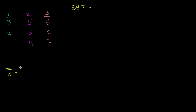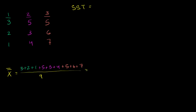So it's going to be 3 plus 2 plus 1, plus 5 plus 3 plus 4, plus 5 plus 6 plus 7, and then we have 9 data points here, so we'll divide by 9. 3 plus 2 plus 1 is 6. 5 plus 3 plus 4 is 12. And then 5 plus 6 plus 7 is 18. 6 plus 12 is 18, plus another 18 is 36, divided by 9 is equal to 4.